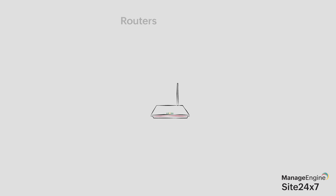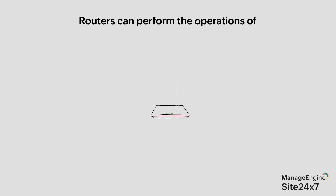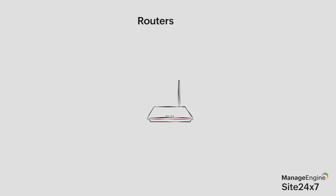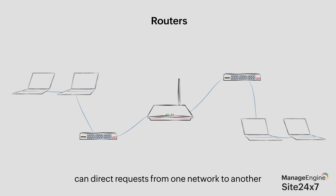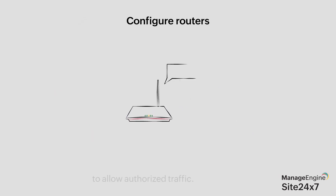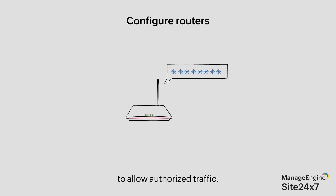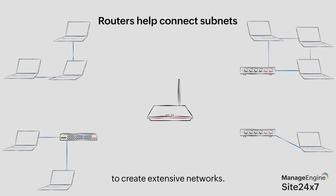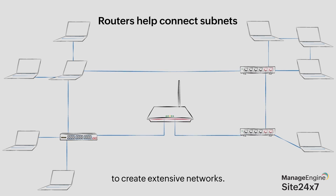You might have heard of routers. They are vital to any network. Routers are intelligent devices that can perform the operations of hubs, bridges, or switches, as they direct requests from one network to another by analyzing the IP address in the packet. As the first line of defense, network admins must configure routers to allow only authorized traffic. A router helps create an extensive network by connecting networking segments or subnets.